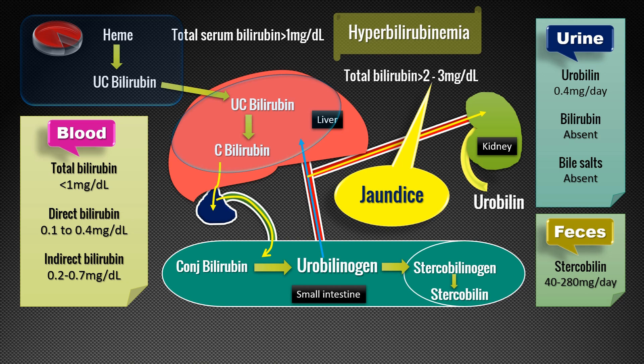The last type of jaundice is due to obstruction to the flow of bile from the gallbladder to the small intestine. This may be due to impacted gallstones within the gallbladder, or obstruction of the common bile duct by malignancy of the head of the pancreas or the common bile duct itself. This obstruction prevents smooth passage of bile, and this type is called post-hepatic or obstructive jaundice, also known as extra-hepatic obstruction.